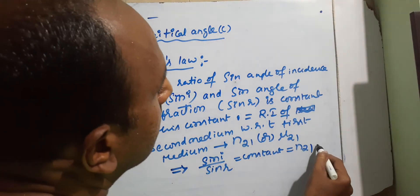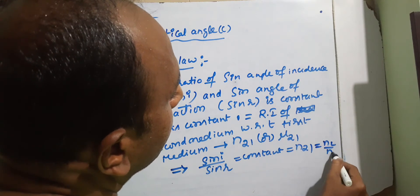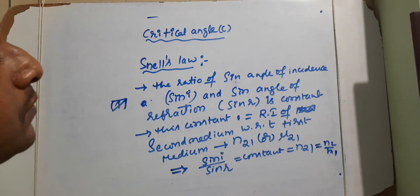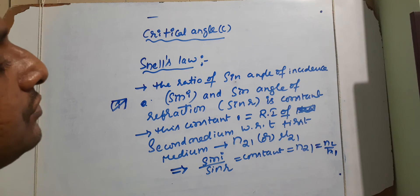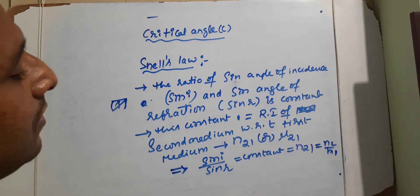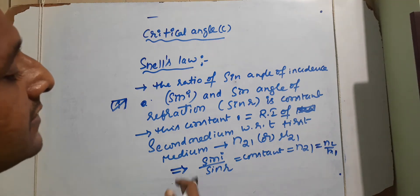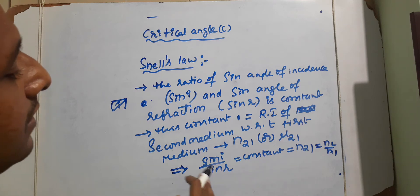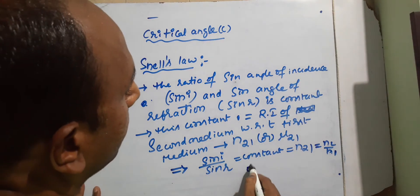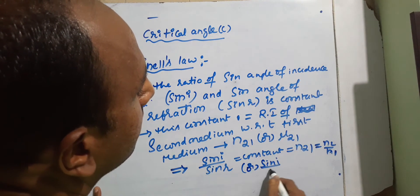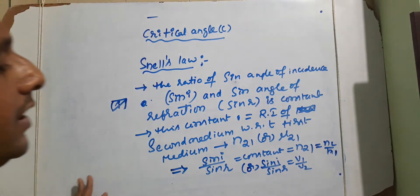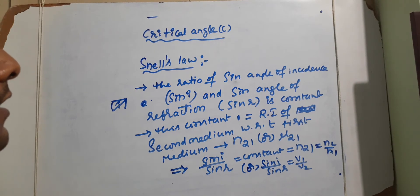Now n₂₁ is also given as n₂/n₁, as explained clearly in the previous videos on refractive index. So sin i / sin r equals the constant, which also equals n₂₁, or n₂/n₁, or v₁/v₂. We have various forms of the formula for Snell's law.